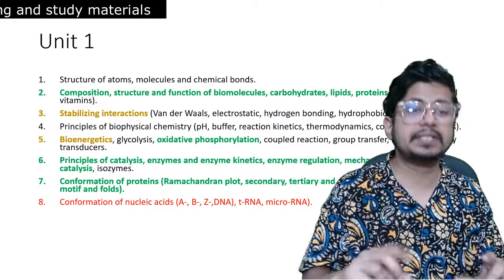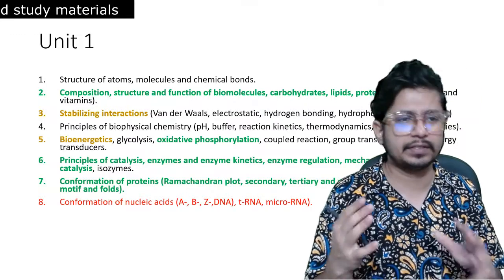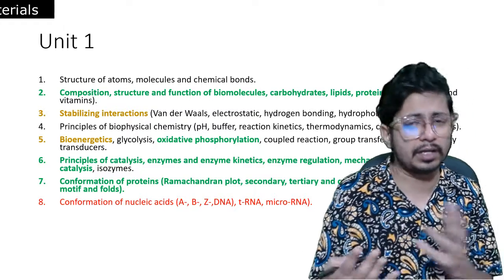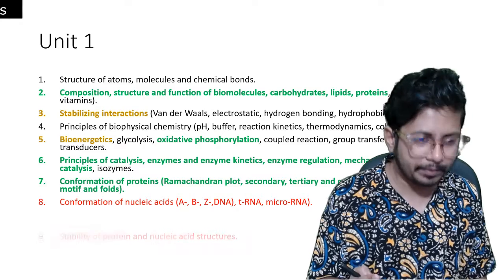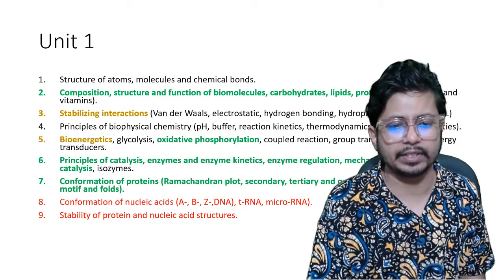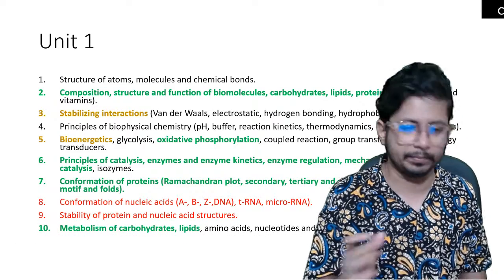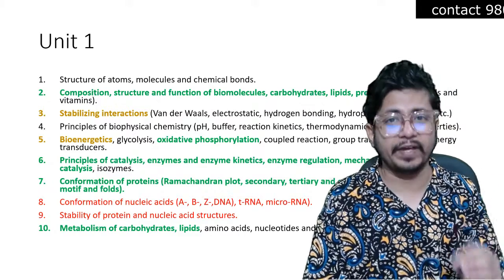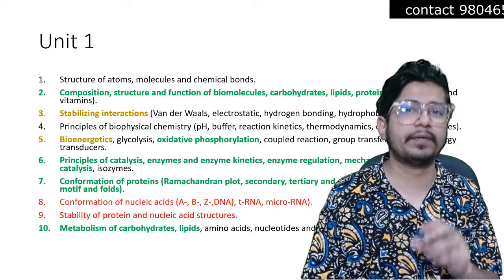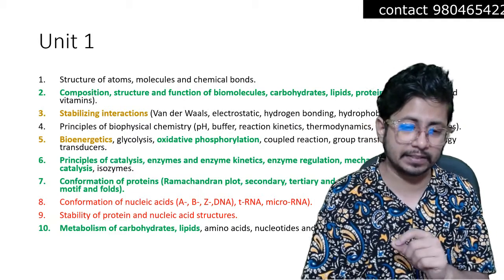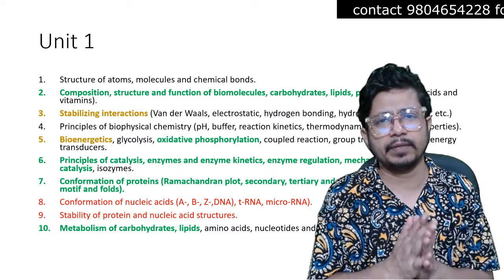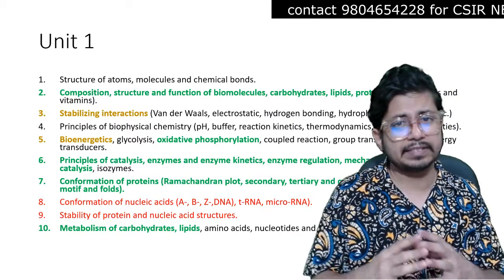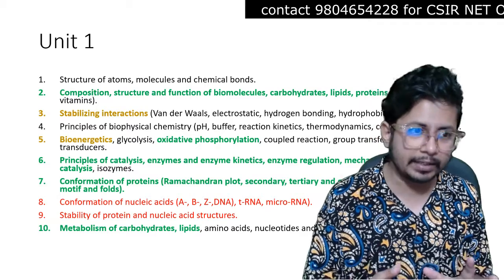So we have green for the most important, yellow for moderately important, and red for least important — but we will still get questions from all these topics approximately every year. Stability of proteins and nucleic acid structures are also equally important. Lastly, metabolism of carbohydrates and metabolism of lipids are very very important topics from Unit 1 CSIR NET Life Science syllabus.